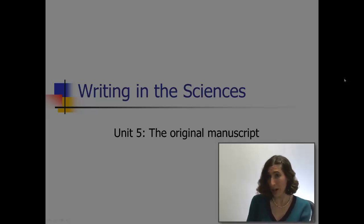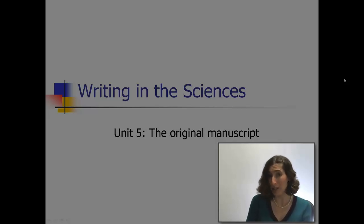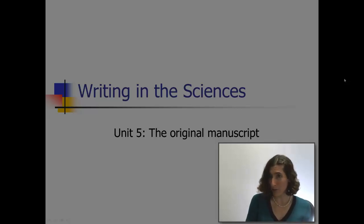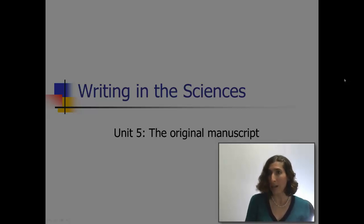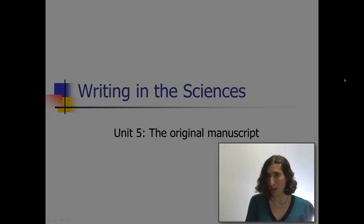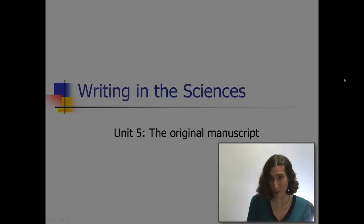We talked about streamlining your writing process. I like to break the writing process into three discrete steps. There's what I call the pre-writing step, when you're gathering and organizing your information and coming up with the themes of your manuscript. I keep that separate from the next step, which is writing the first draft — when you're actually sitting down at the computer composing prose. And then the third step is revision: going back and editing that prose.